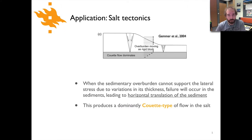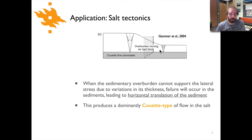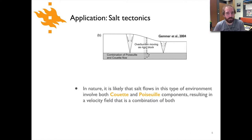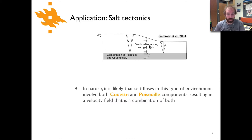Alternatively, if the sediment overburden is not stable — meaning it is being faulted, with extension at the top of the slope and compression at the bottom — the overburden may be gliding along on top of the salt layer. In that case we would expect to see dominantly Couette-type flow in the salt, with a linear increase in velocity across the channel. And naturally, if there is a pressure gradient but the overburden is also moving, we might see a combination of Couette and Poiseuille flow in the salt velocities.